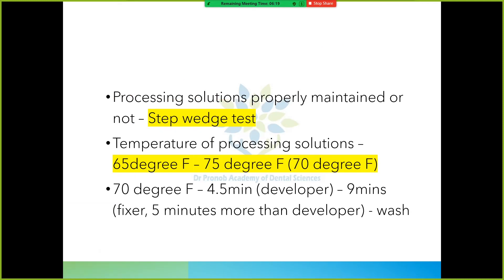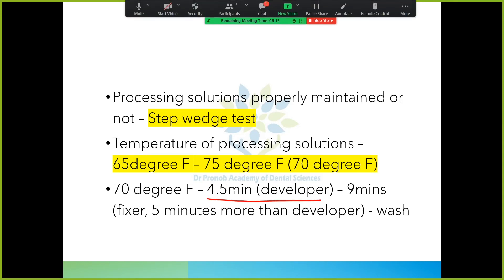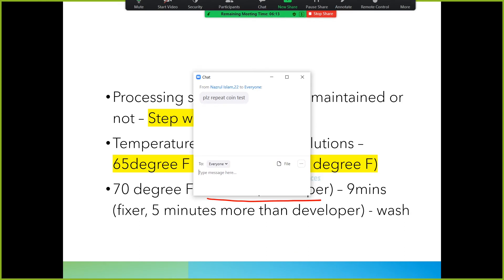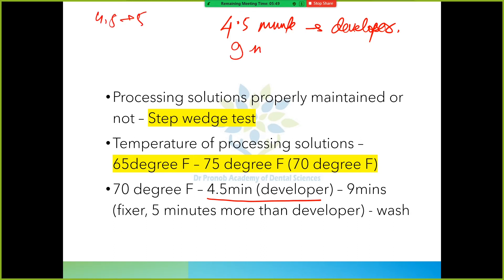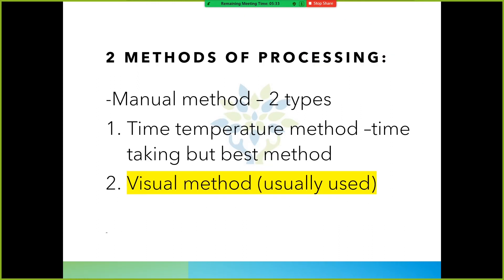In terms of processing methods: the first is the time temperature method, where you keep the film 4.5 minutes in the developer. We don't use this technique in our college because we don't have so much time - that is the ideal 4.5 minute, 9 minute technique. We don't use it normally.